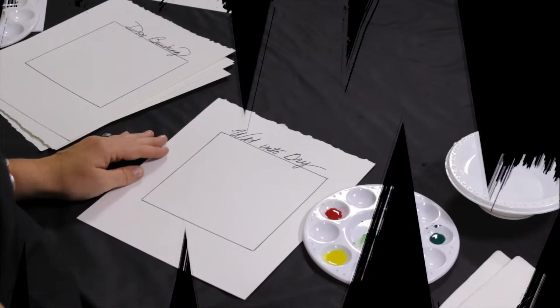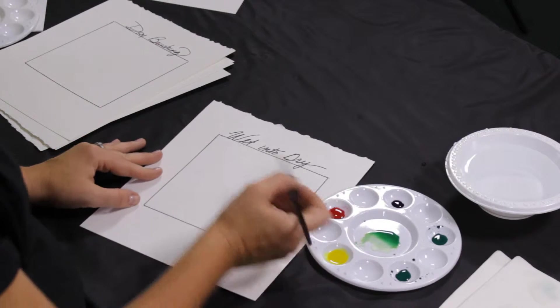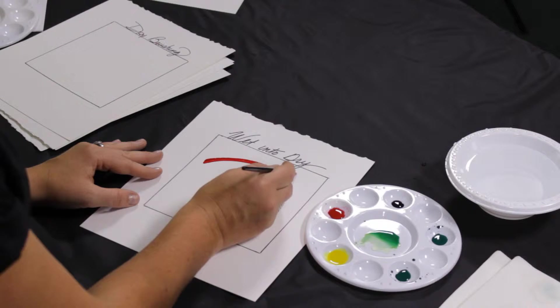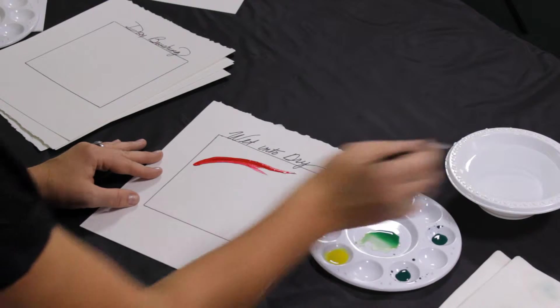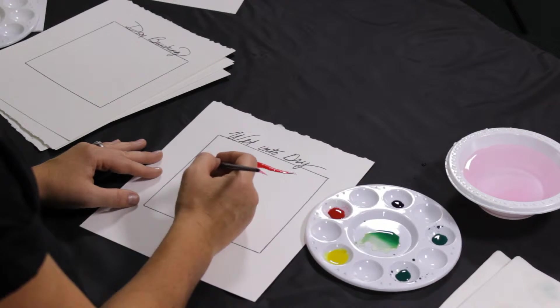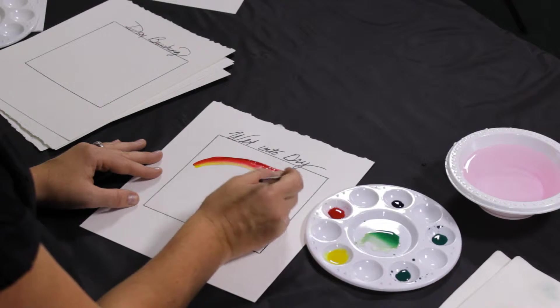Wet into dry is your second basic watercolor technique. Basically you're just taking the wet paint and you're putting it onto dry paper. You have much more control with the paint at this point and your paint colors are much more vibrant. You can still mix and blend colors as well by letting them hit each other on the ends.